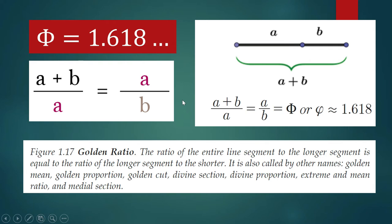The golden ratio is, in fact, a number — it is an irrational number approximately equal to 1.618. The first description of the golden ratio or golden proportion was given by Euclid, the mathematician credited with starting geometry.